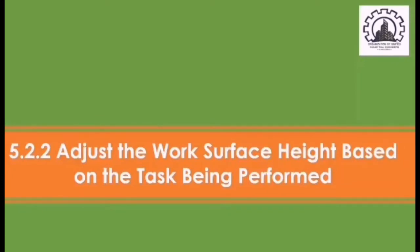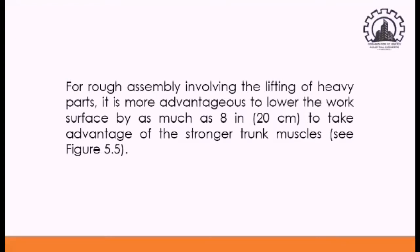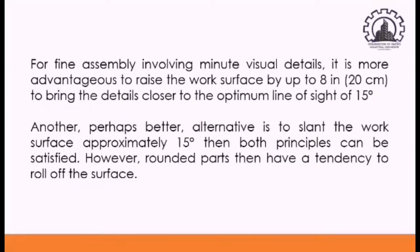For the second lesson, adjust the work surface height based on the task being performed. This means that your work surface height will be based on the task that you are doing. For rough assembly involving the lifting of heavy parts, it is more advantageous to lower the work surface by as much as 8 inches or 20 centimeters to take advantage of the stronger trunk muscles. For fine assembly involving minute visual details, it is more advantageous to raise the work surface by up to 8 inches or 20 centimeters to bring the details closer to the optimum line of sight of 15 degrees. Another, perhaps better alternative is to slant the work surface approximately 15 degrees, then both principles can be satisfied. However, rounded parts then have a tendency to roll off the surface.